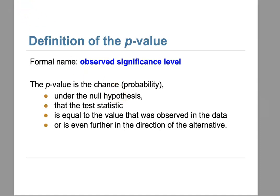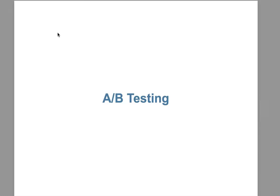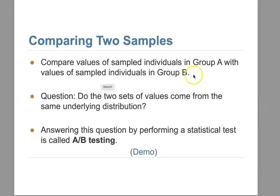Now let's introduce our new topic: A/B testing. What is A/B testing? Basically, we are comparing two samples. We compare the value of sampled individuals in Group A with the value of sampled individuals in Group B. We have two sample groups drawn from the population, and the question is: do these two sets of values come from the same underlying distribution or not?